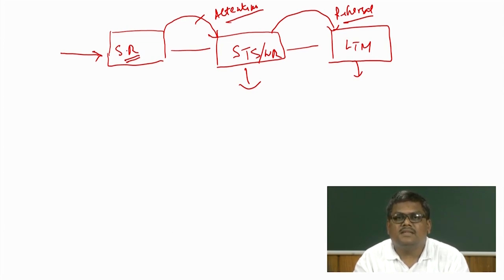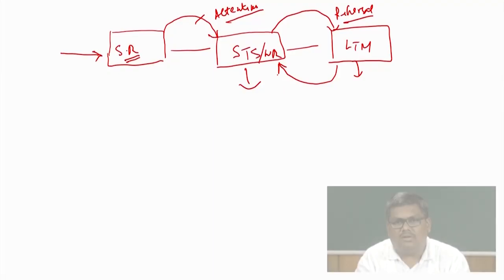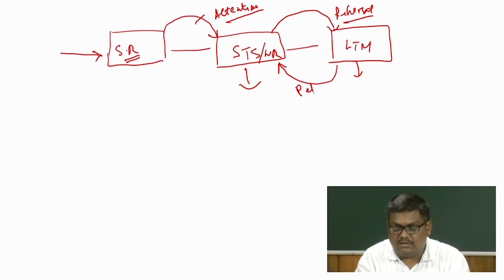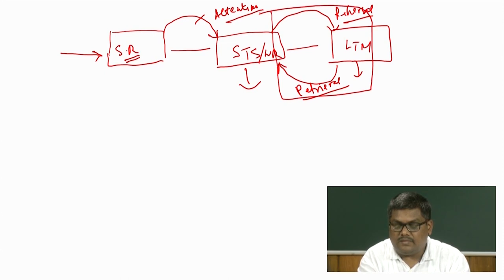The long-term store is not an active store in the way the short-term store is. The working memory concept describes the short-term store as an active store that can do a lot of activity. But the long-term store does not do any activity — it is just a kind of storehouse. Information is stored there in a highly organized and categorized format, but there is no action. If information needs to be acted upon, it has to come back to the short-term or working memory store. The process that moves information from long-term back to short-term store is called the retrieval process.